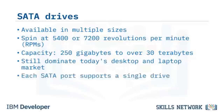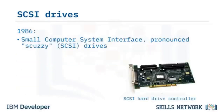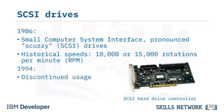SATA drives still dominate today's desktop and laptop market. Each SATA port supports a single drive, and most desktop motherboards have at least four SATA ports. Small Computer System Interface, or SCSI hard drives, joined the storage market in 1986. SCSI drives were fast, working at 10,000 or 15,000 rotations per minute. SCSI drives accessed data much faster than standard ATA drives at the time but began to be discontinued around 1994 and are no longer used.